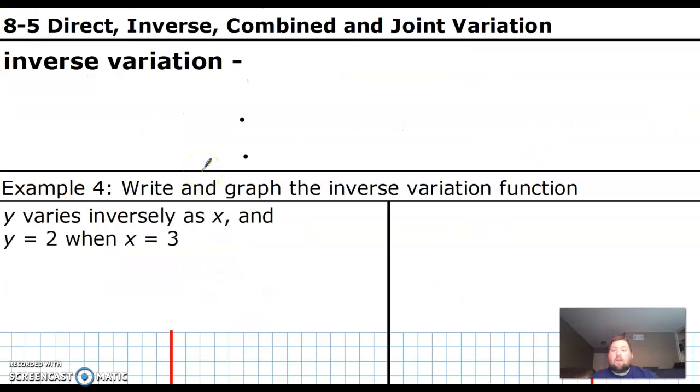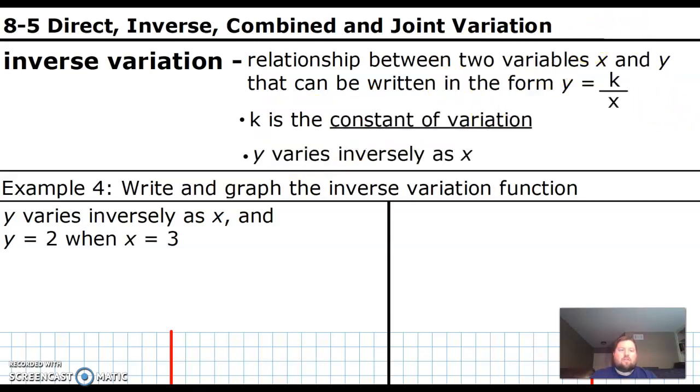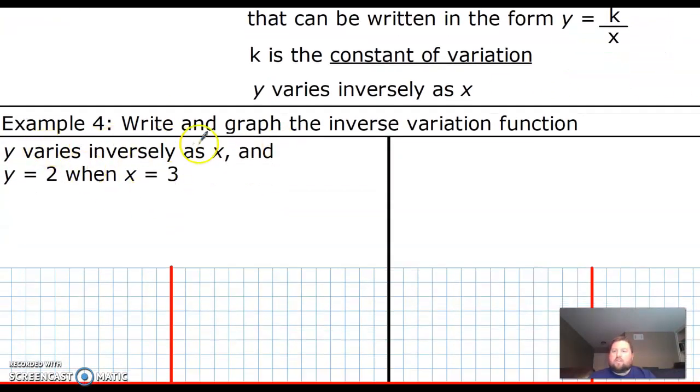Next one is inverse variation. This is the reason why this is in this unit because the graph of what this looks like. So same type of deal here. Notice the new equation for inverse. It is y equals k over x. So that's a rational function, just like we learned how to graph before. So let's graph one of these. Y varies inversely as x and y equals 2 when x equals 3. So we need to figure out what k is first. We plug in 2 and 3 for x and y. So 2 equals k over 3. Multiply by 3 on both sides. And we get k equals 6.